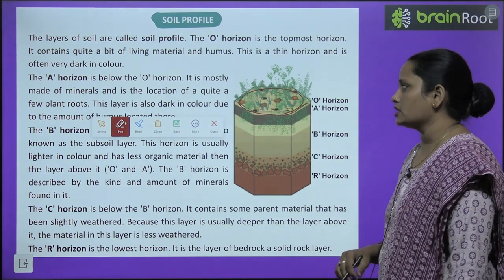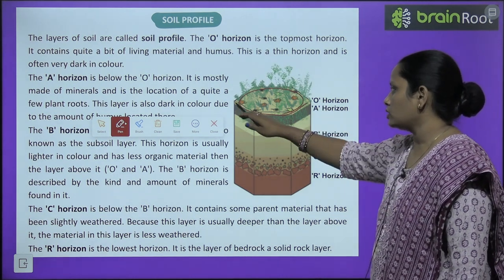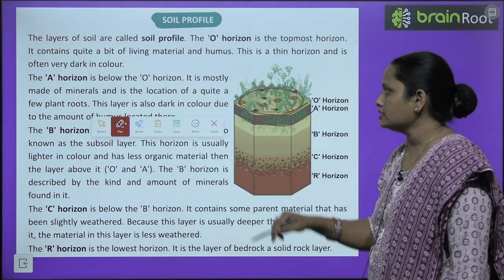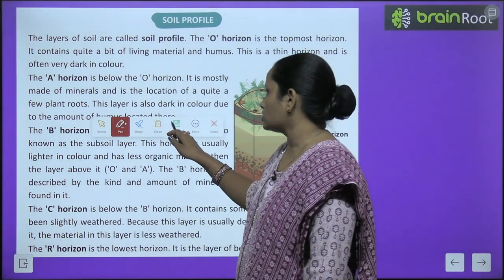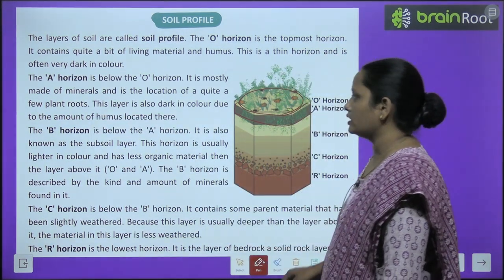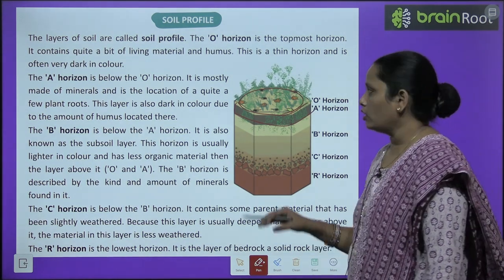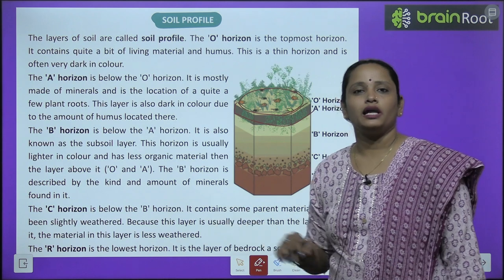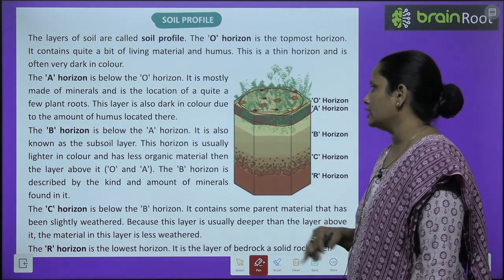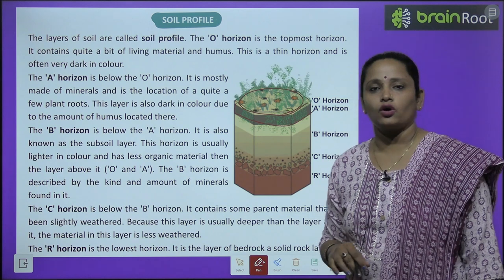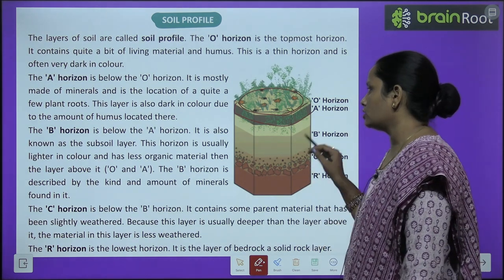The A horizon is below the O horizon. It is mostly made of minerals and is the location of quite a few plant roots. This layer is also dark in color due to the amount of humus located there.